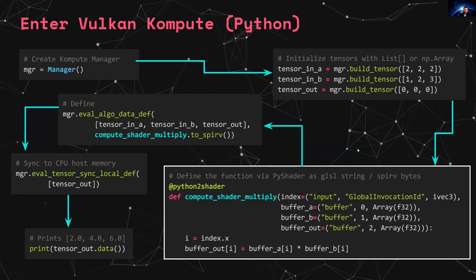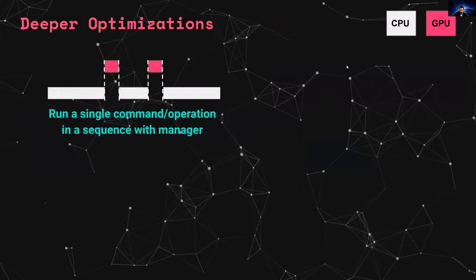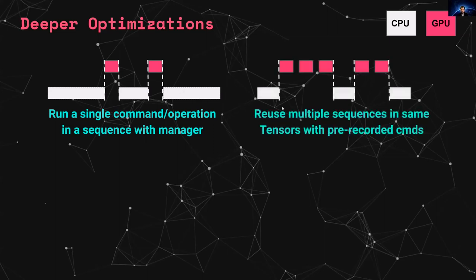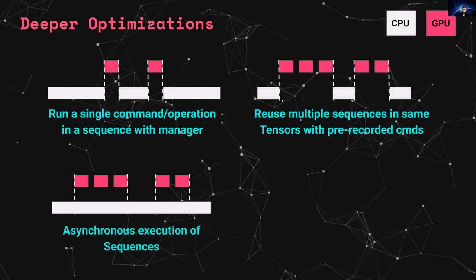The principle is not to hide but to augment. Now let's delve into some optimizations. Running a single command through the manager means the CPU submits an operation, waits, gets the result, then submits the next one. An improvement is to reuse multiple sequences by prerecording commands — recording a bunch of operations and running them together. You can also run asynchronous dispatches, meaning you submit to the GPU without waiting, allowing the CPU to continue doing other things while the GPU executes.